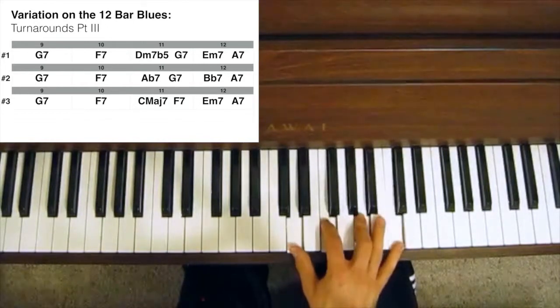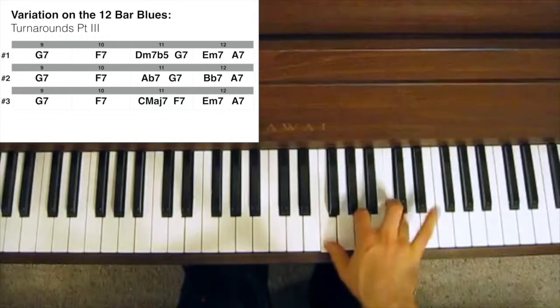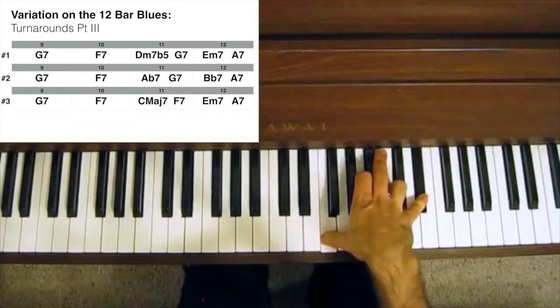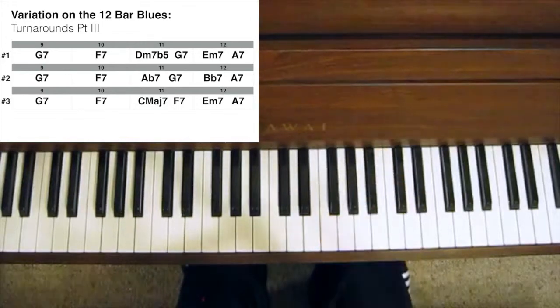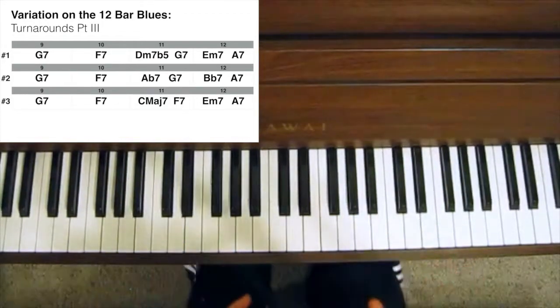The Dm7 has those notes. You're effectively dropping the D and adding an F. So that's a little bit of logic behind that, but really it's just a little bit of a different chord progression.